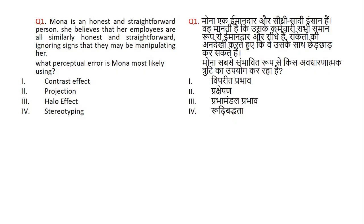This is your first question. You have to read the question well and then reply in 10 seconds. Mona is an honest and straightforward person. She believes that her employees are all similarly honest and straightforward, ignoring signs that they may be manipulating her. What perceptual error is Mona most likely using? The right answer is 2, that is projection.